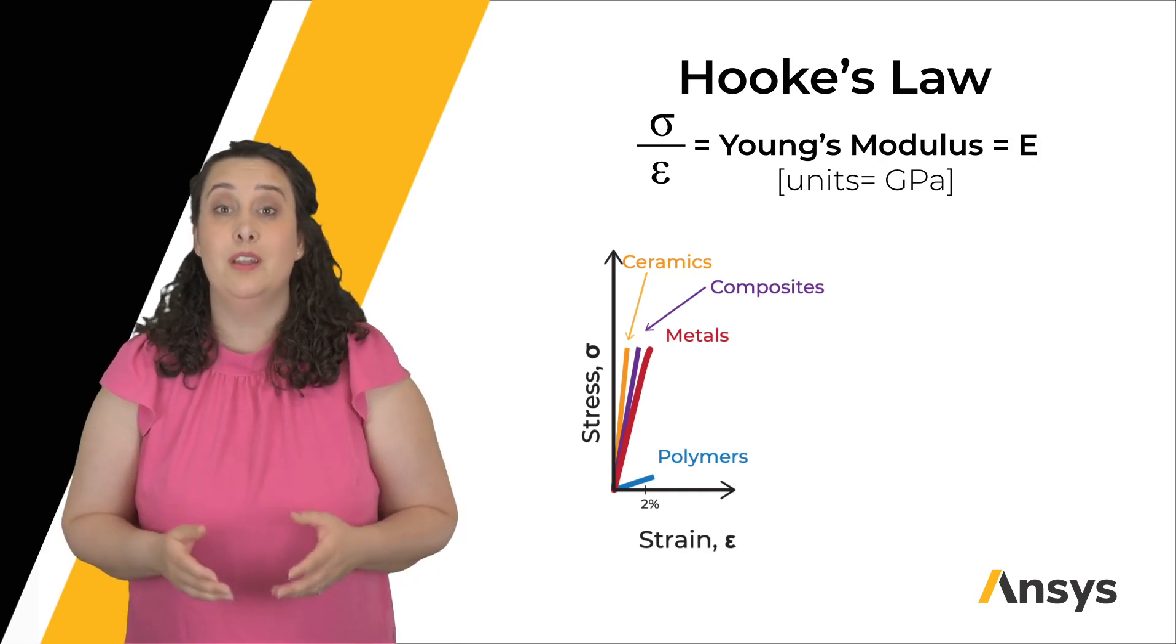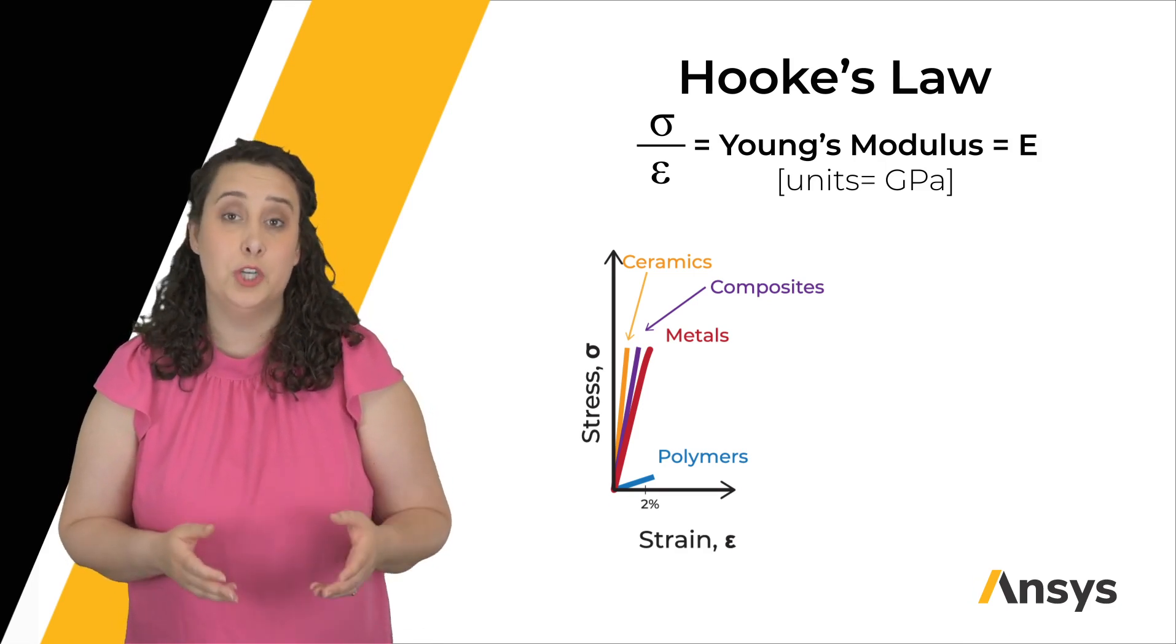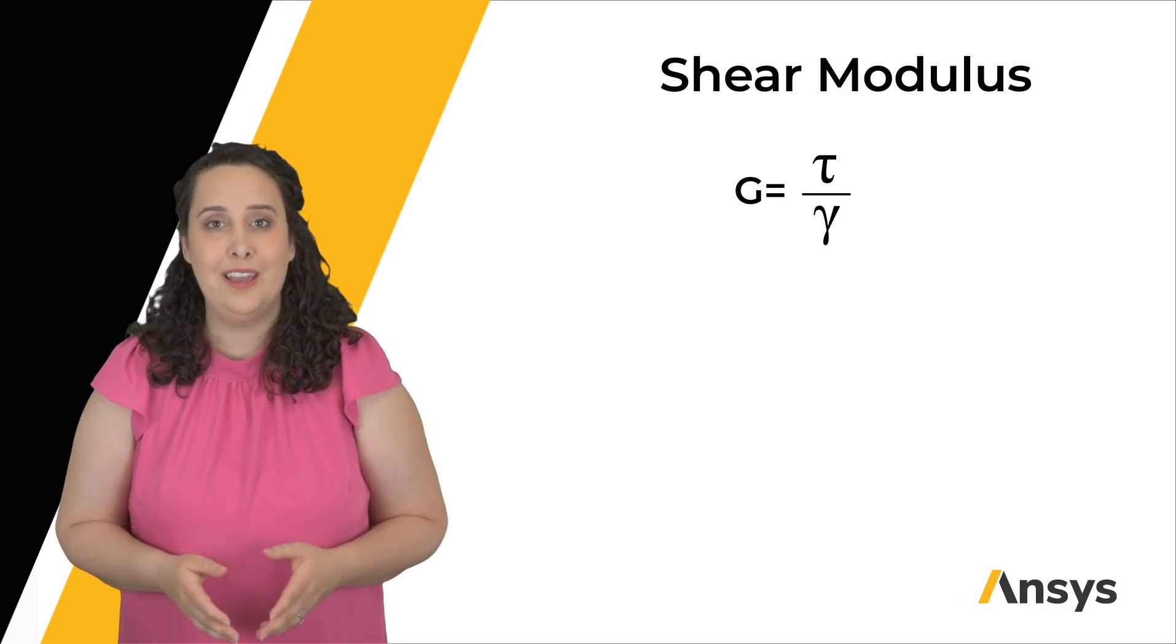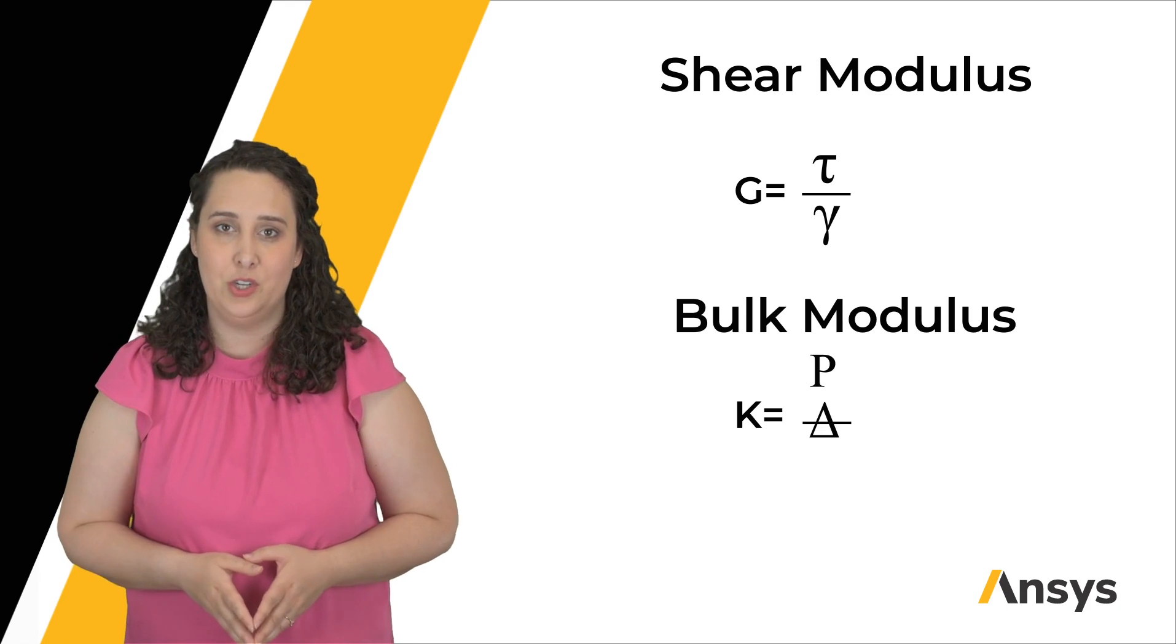You can also calculate moduli for our shear and our hydrostatic cases. The shear modulus G is related to tau over gamma, and our bulk modulus K is related to pressure and dilation.